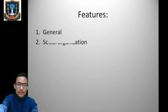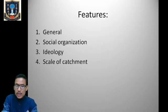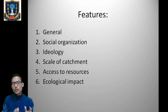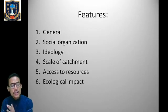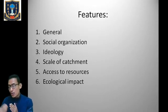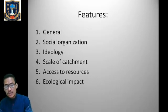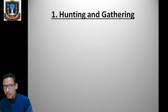Each mode of existence has to be described and discussed under particular features. All four types — hunting and gathering, pastoralism, agricultural, and industrial — we are going to discuss each one under general features, social organization, ideology, scale of catchment, access to resources, and ecological impact. Today we are going to learn the first mode of existence, which is called hunting and gathering mode of existence.